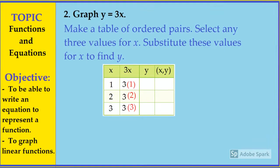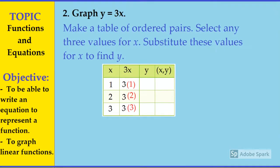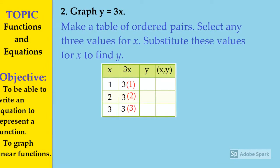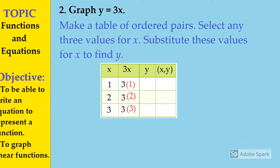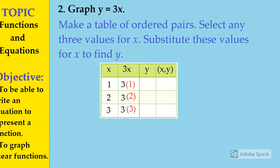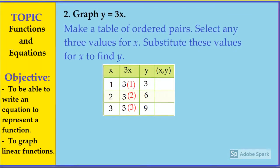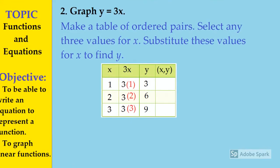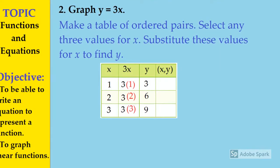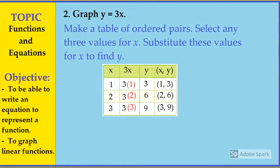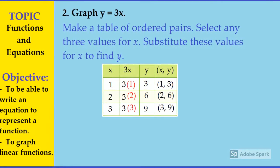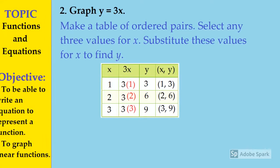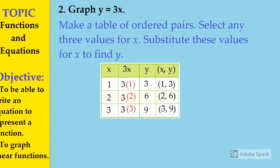Let us assign the value of x from 1 to 3 only. So to find the function: 3 times 1, 3 times 2, and 3 times 3, and we can find out y. From the assigned values of x, we find out that y is equal to 3, 6, and 9. Now let us put the values of x and y we have found in the xy column — these are the ordered pairs.